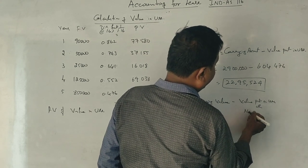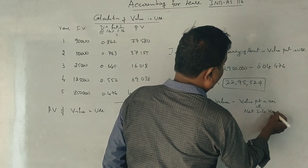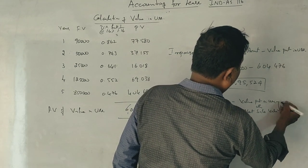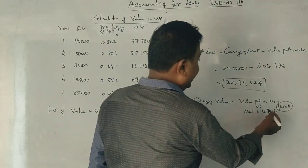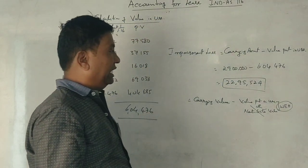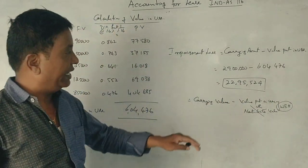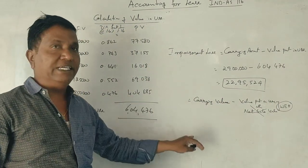We also need to consider net sale value. This is the formula for the impairment loss calculation.